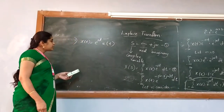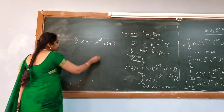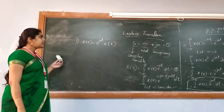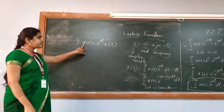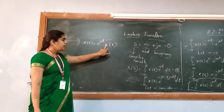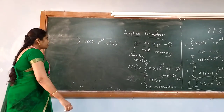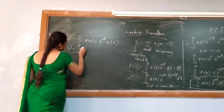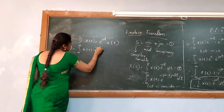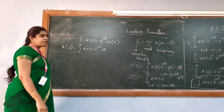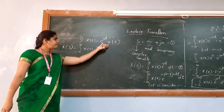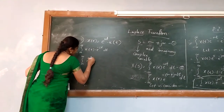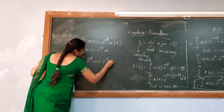Now I will explain an important problem of Laplace transform. This question is given in the exam: calculate the Laplace transform for the given equation X(t) = e^(at)·u(t). First, we write the Laplace transform equation: integral from minus infinity to infinity of x(t)·e^(−St) dt. We substitute the function, so the equation becomes the integral of e^(at)·u(t)·e^(−St) dt.